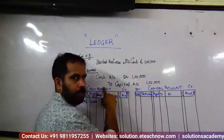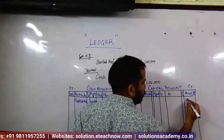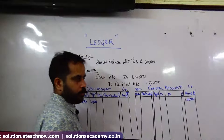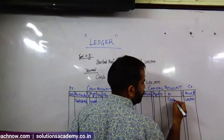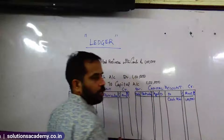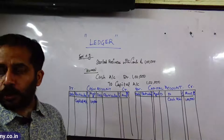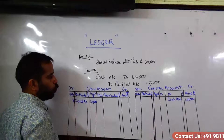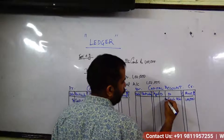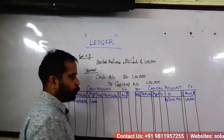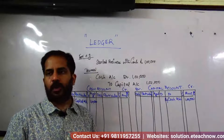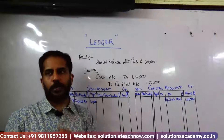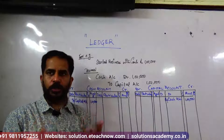Capital account is credit, so I will credit the capital account. On the credit side of Capital account, I will write 'Cash.' In some schools, on the debit side they write 'To' and on the credit side they write 'By.' It is allowed to not write 'To' or 'By' — that is okay.